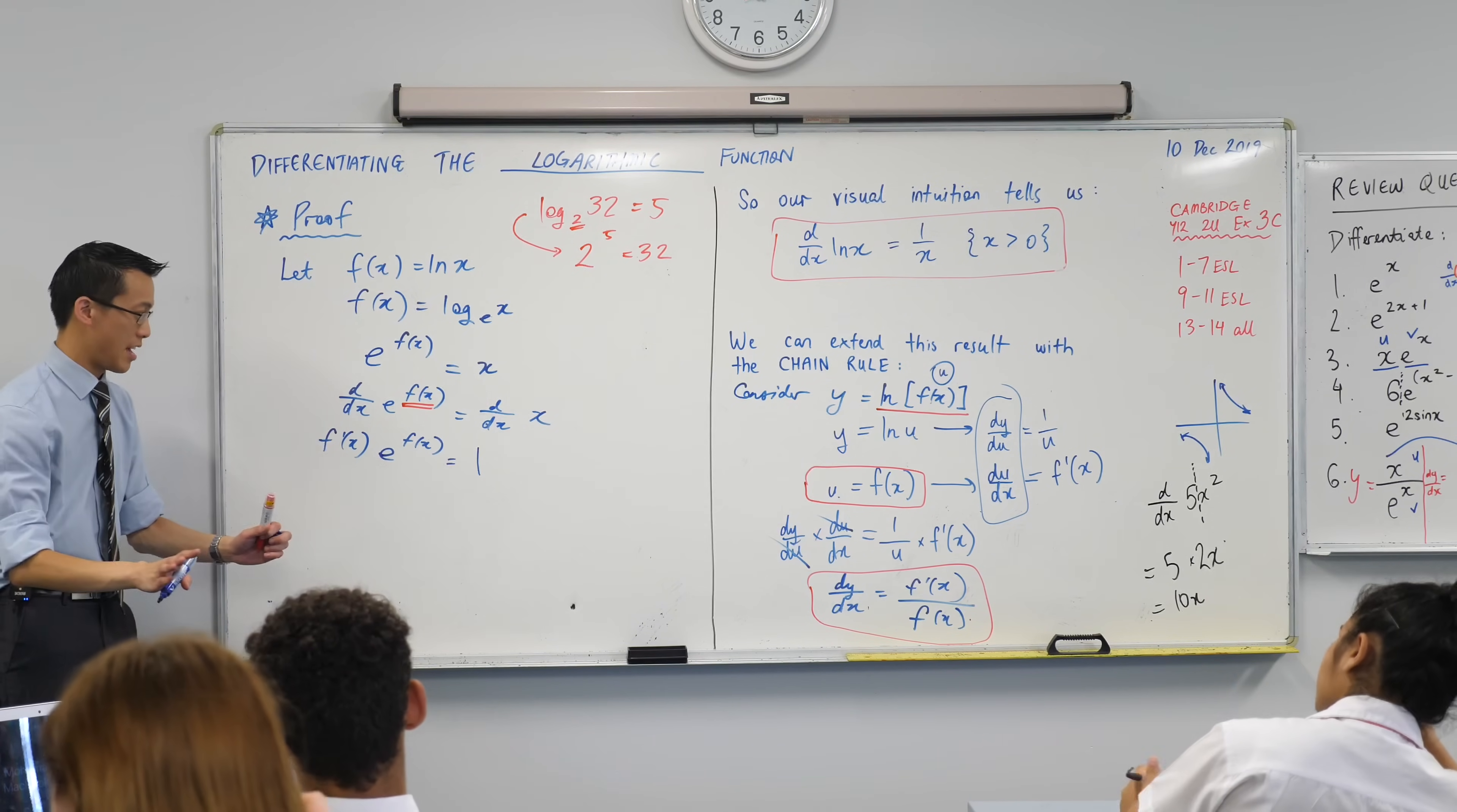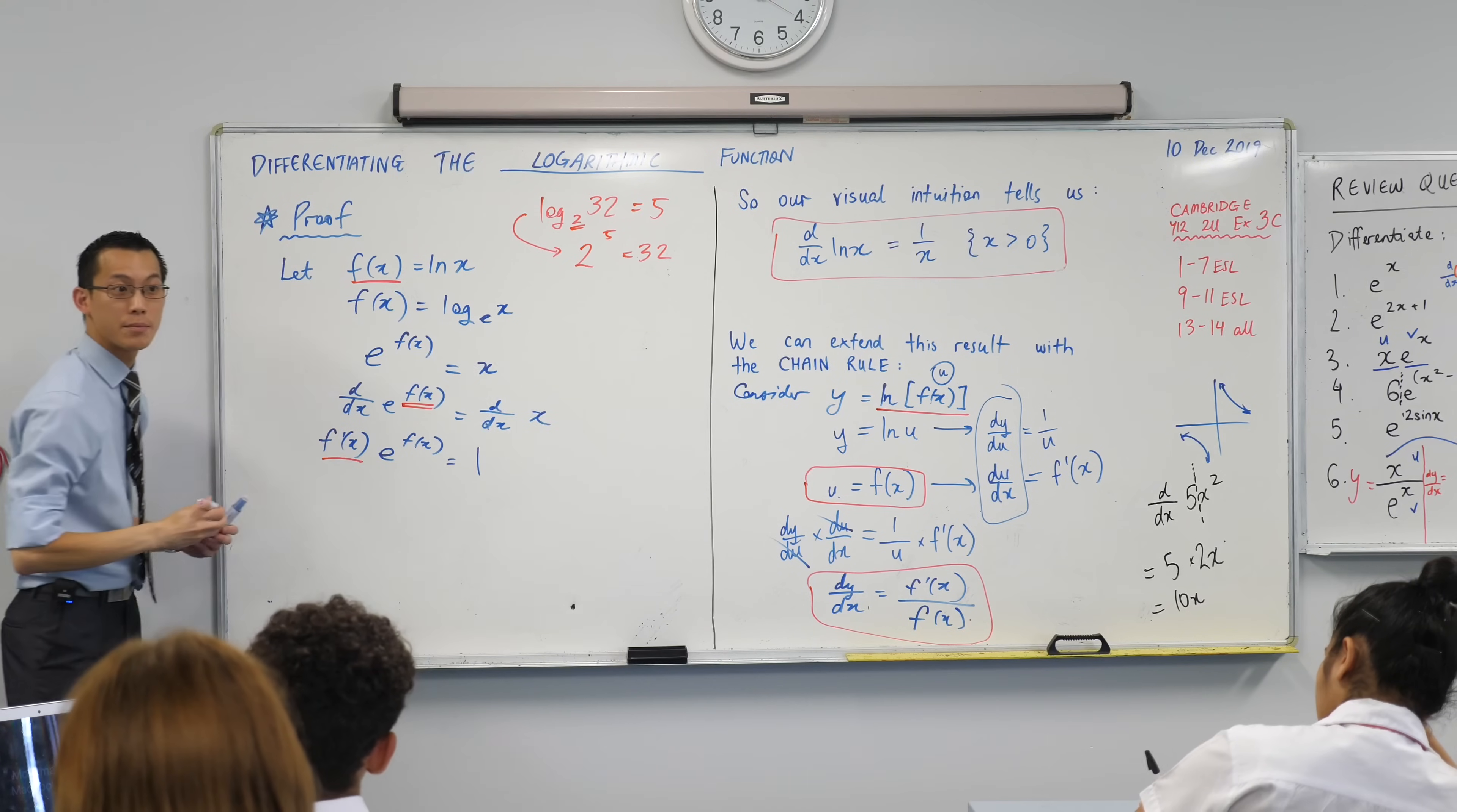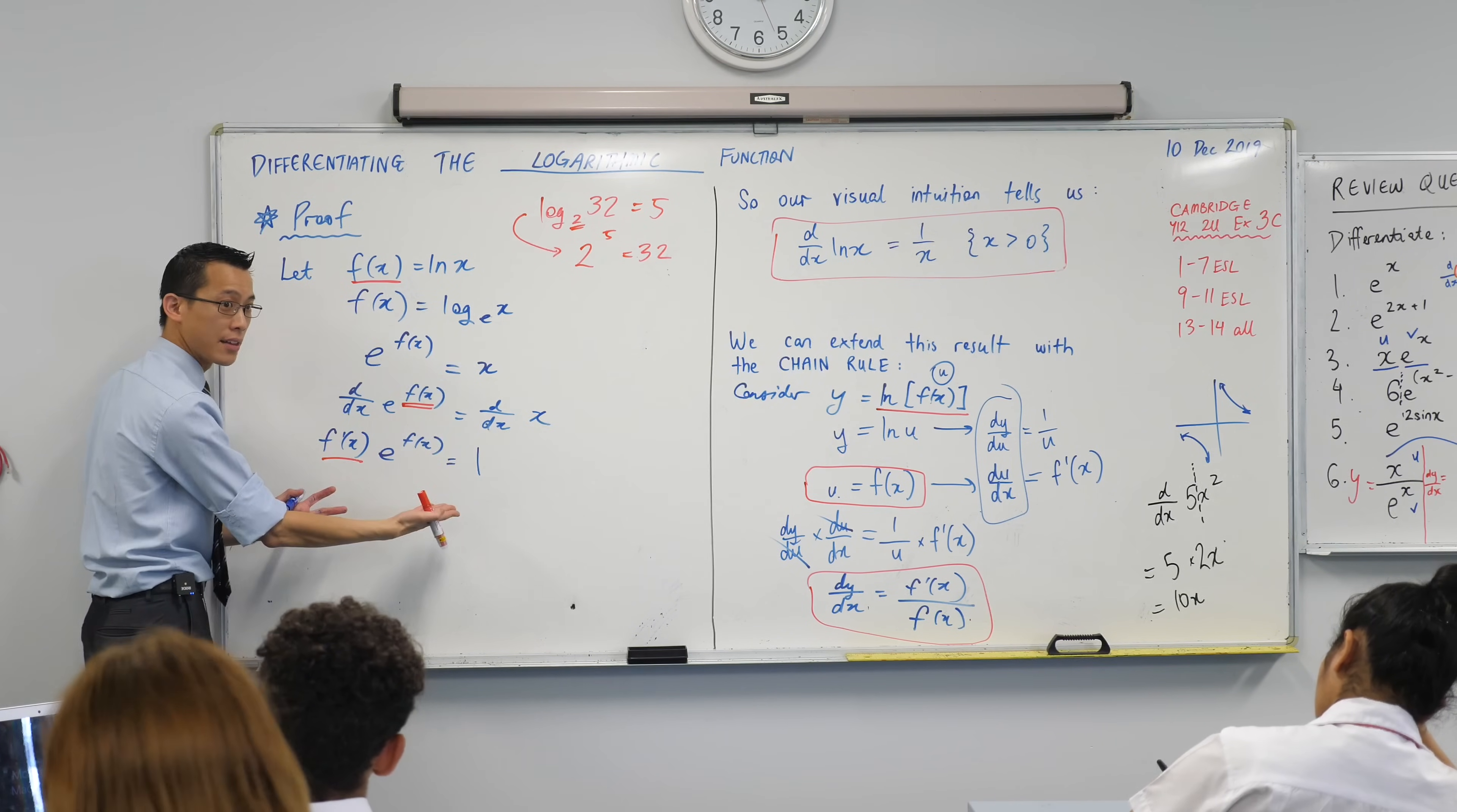All right now I'm almost there, I'm very very close. What I'm really after is this guy. Do you see that? Like this is the part I want, f dash, because I want to differentiate this guy. So I want to get that by itself. I'm going to change the subject so it's just this. So what should I do to both sides of this equation?